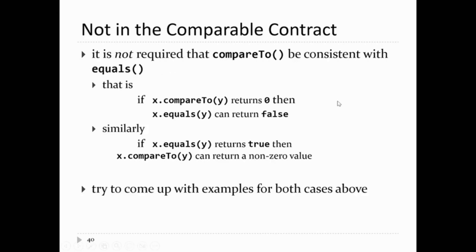It's not required that compareTo be consistent with equals. For example, x.compareTo(y) can return zero even when x.equals(y) returns false — which is exactly the case for the Point compareTo method we just implemented. Similarly, you can have two objects that are equal and yet compareTo does not return zero. You can actually construct sensible cases for both of these if you think about it. It is possible to come up with instances where compareTo is not consistent with equals.